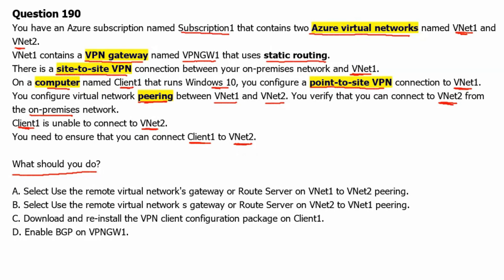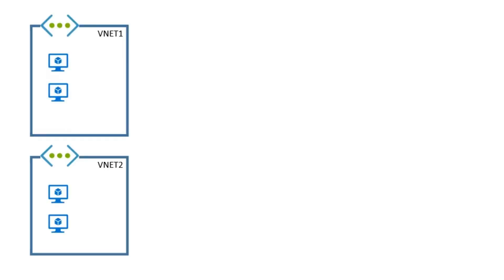Let's create a diagram to visualize this question. As per the question, we have one Azure subscription — Subscription1 — which contains two Azure virtual networks named VNet1 and VNet2. VNet1 and VNet2 would have some resources in them. VNet1 contains a VPN gateway that uses static routing.